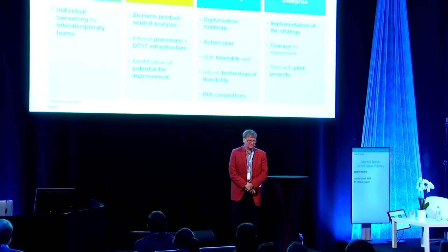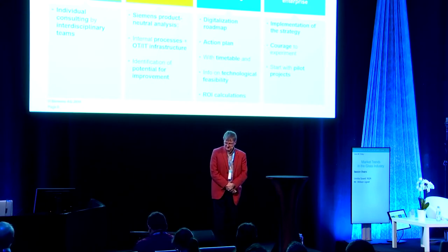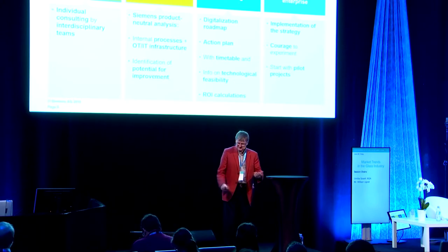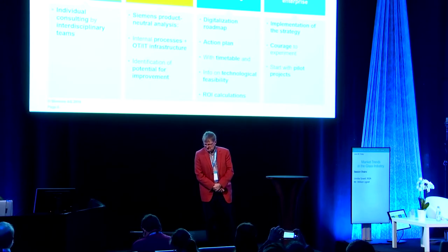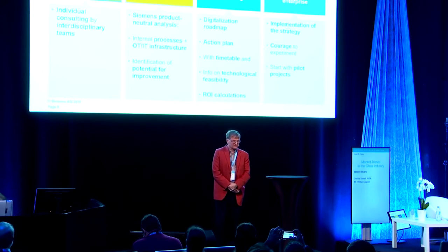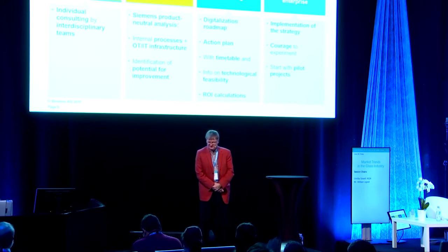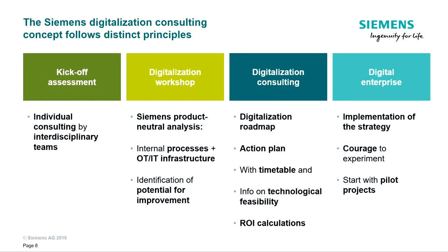Here is the systematic if you were to do it with Siemens. We start off with a kickoff assessment — individual consulting with interdisciplinary teams covering the entire value chain. We define your business goals, write them down, and ask questions like: why are customers buying from you? When business goals are identified, we go into workshops — usually two in a row — to review what's installed, the internal processes, how the companies are operating, and their existing IT and OT infrastructure. This is where we get the first ideas identifying room for improvement.